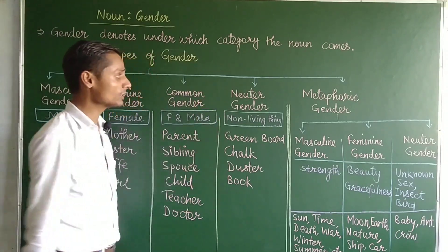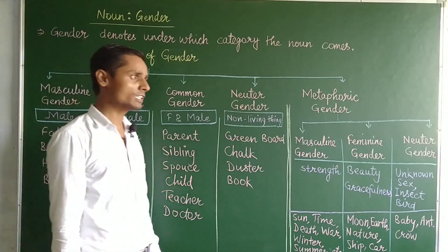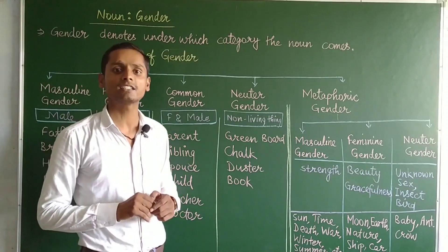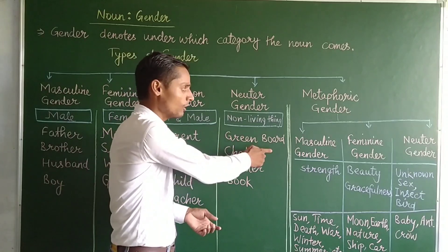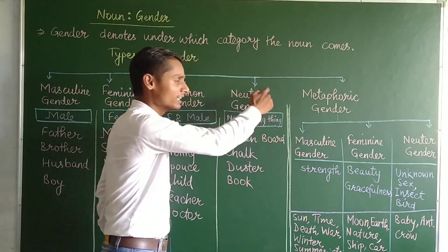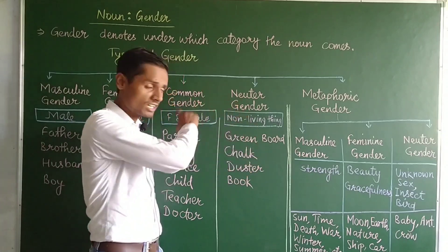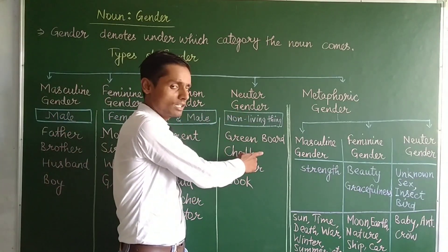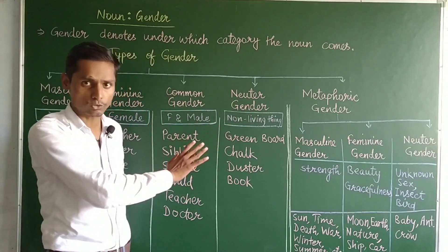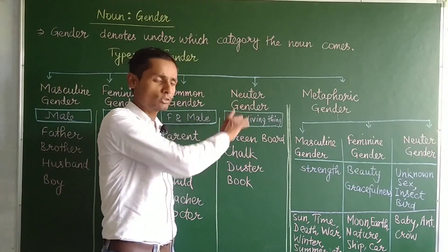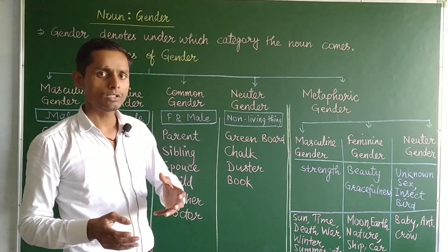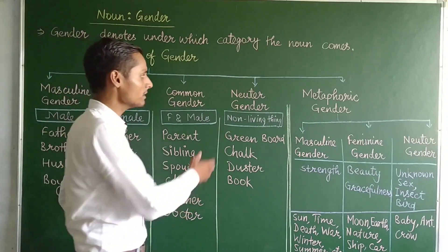The fourth type is neutral gender. Neutral gender refers to nouns that are non-living, meaning no sex can be determined. For example, a green board, chalk, duster — things I use to write and clean — are non-living things. Book, bench, table, etc. are all neutral gender.